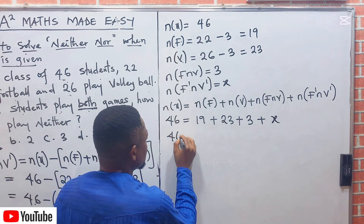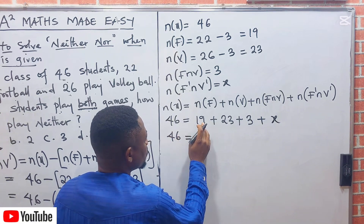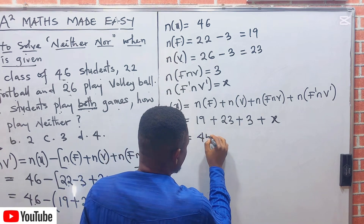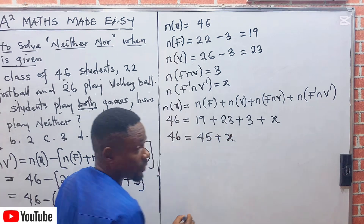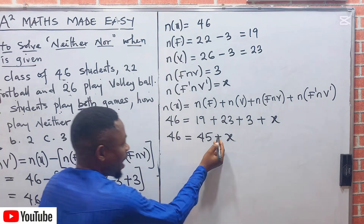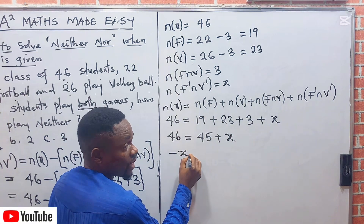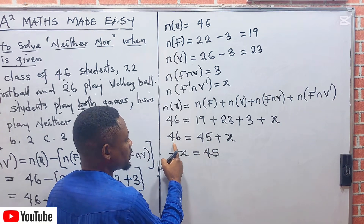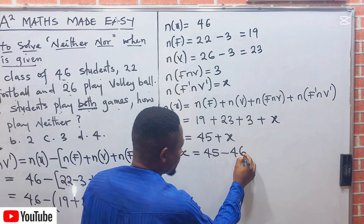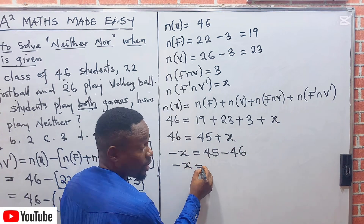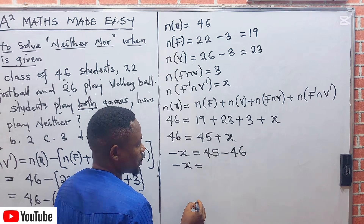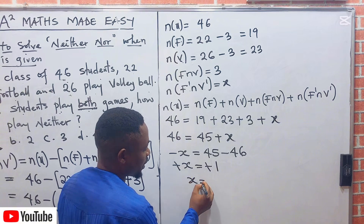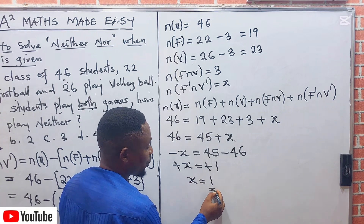So: 46 equals 19 plus 23 plus 3 plus X, which gives 46 equals 45 plus X. Collecting like terms, carry X to one side and 46 to the other: minus X equals 45 minus 46, giving minus X equals minus 1. The negatives cancel and the answer is X equals 1.